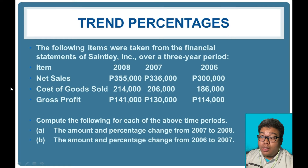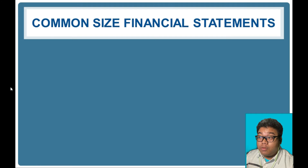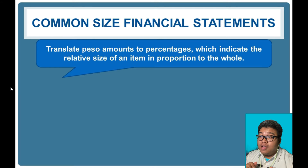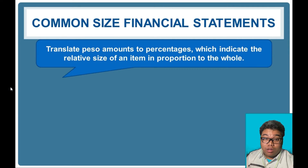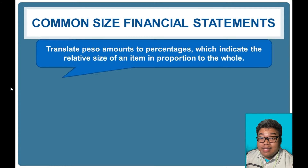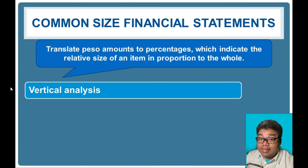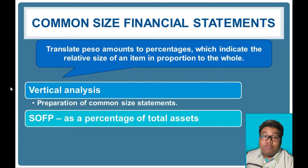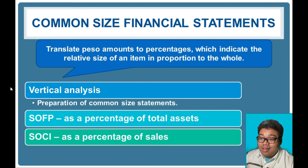We now go to common size financial statements. In a common size financial statement we translate peso amounts to percentages, similar to horizontal and trend percentages, but here we indicate the relative size of an item in proportion to the whole. We convert the financial statement for one period in terms of a certain amount in the statement. The analysis here is vertical analysis.